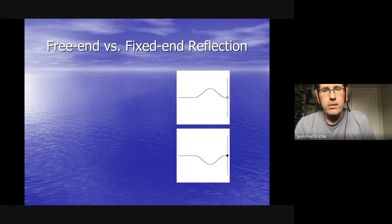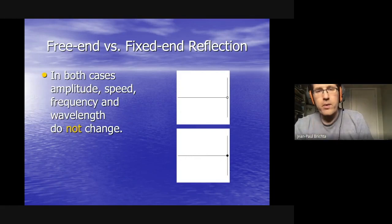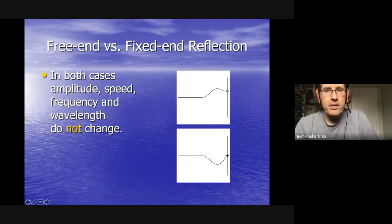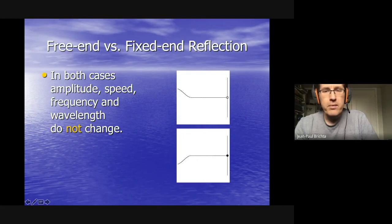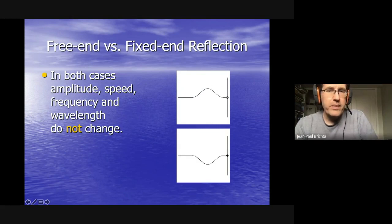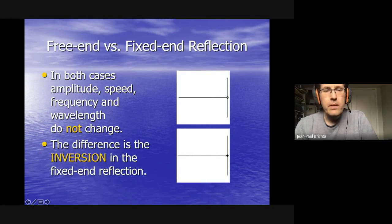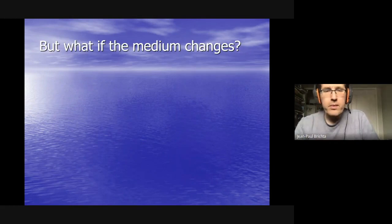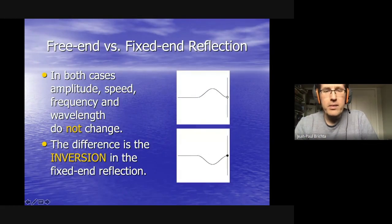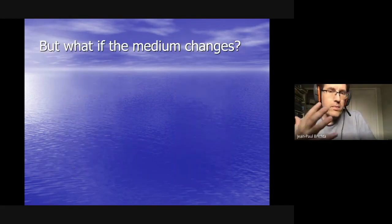Upon reflection, the amplitude — the distance from equilibrium to the crest or trough — doesn't change. The speed doesn't change, and the frequency and wavelength don't change either; in other words, the shape of the wave doesn't change. The only difference is that in the fixed end case, the wave inverts.